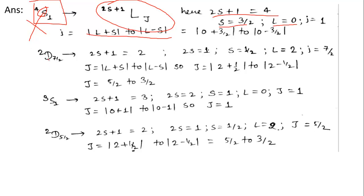Second term symbol: 2D7/2. Here 2S+1 = 2, so S = 1/2. D means L = 2. J ranges from L+S to |L−S|, i.e., 2 + 3/2 to 2 − 3/2, meaning J should range from 5/2 to 3/2. Since J = 7/2 is outside this range, this is also NOT a possible term notation.